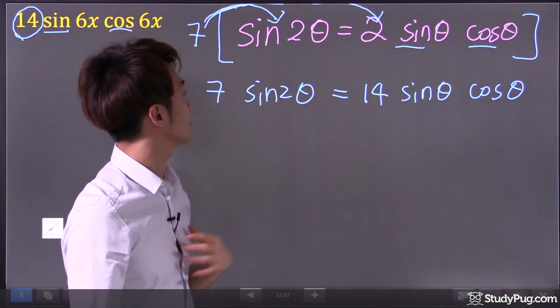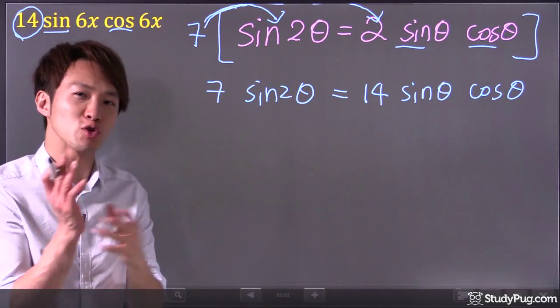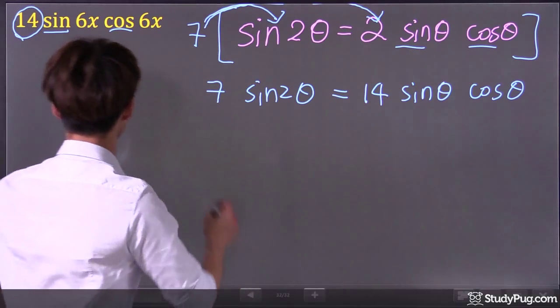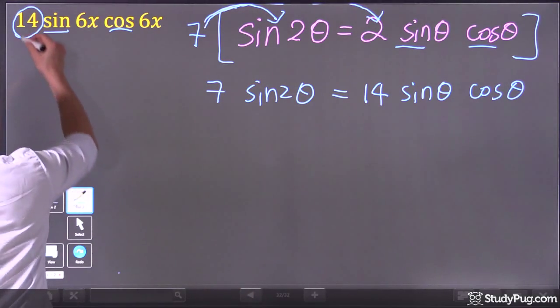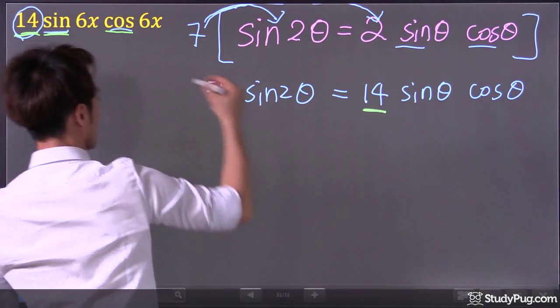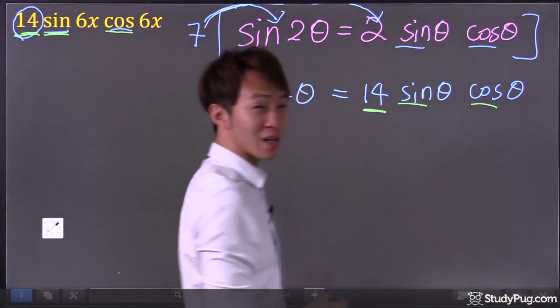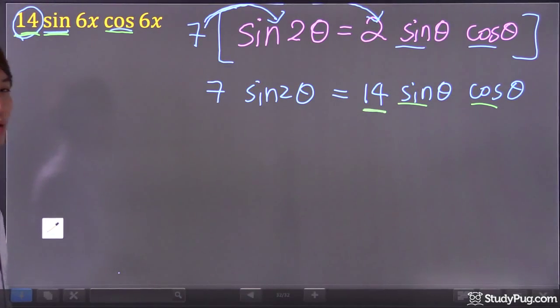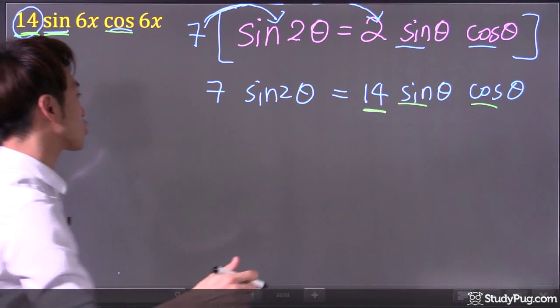So basically multiply seven to the given formula, sine two theta. So guys, would you say we are getting one step closer? Because now, check this out. 14, 14, sine, sine. We're getting actually very close. And the next thing we have to do is what?